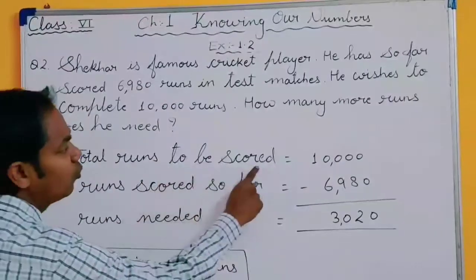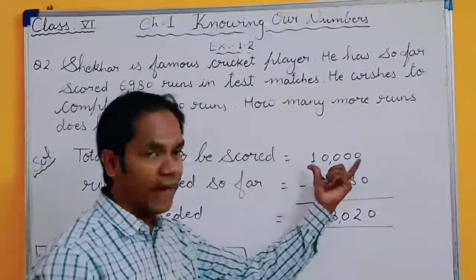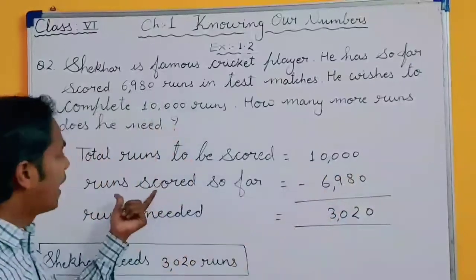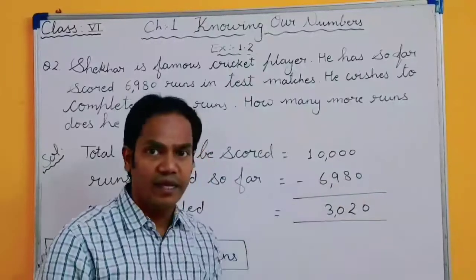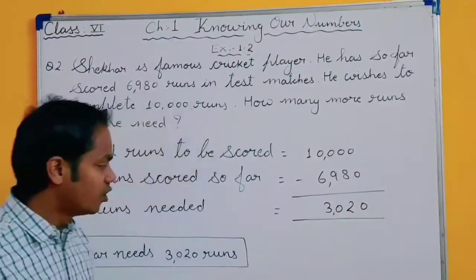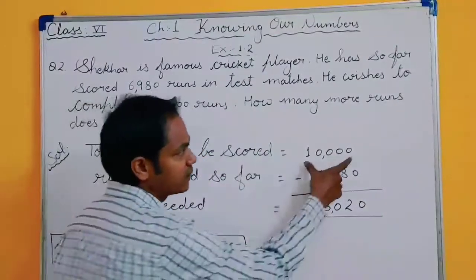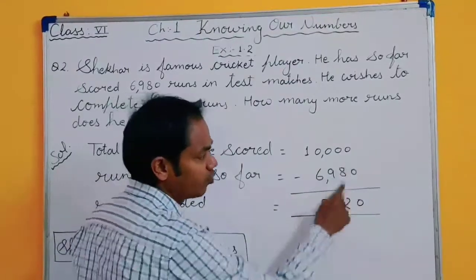Total runs to be scored: 10,000 runs. So far Sekhar has scored 6,980 runs. So how many more runs we need? Subtraction, okay, you know subtraction.